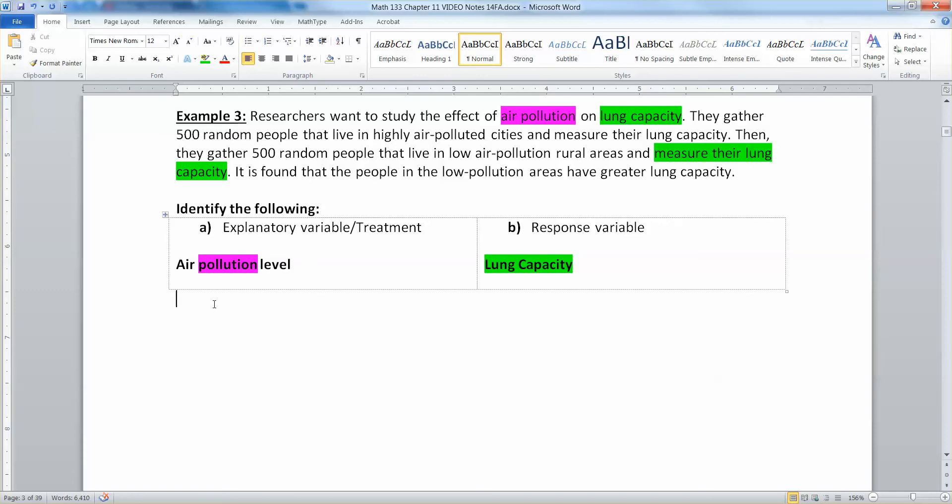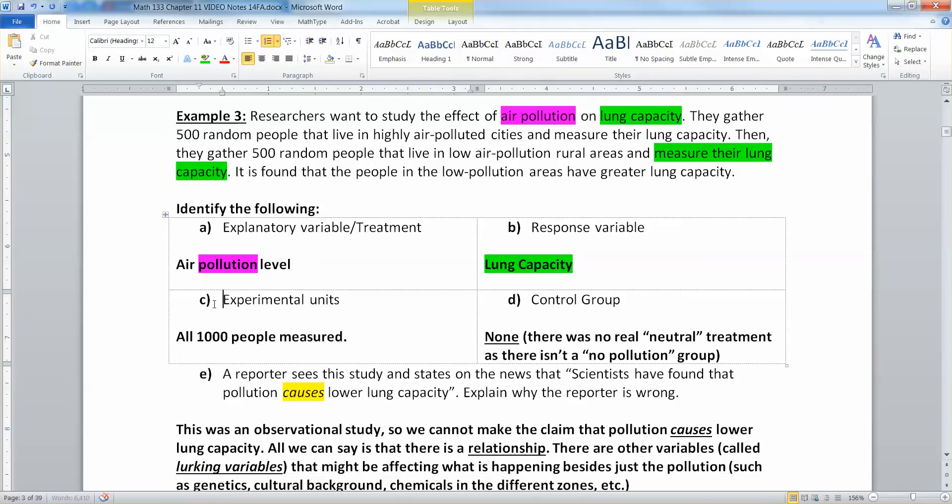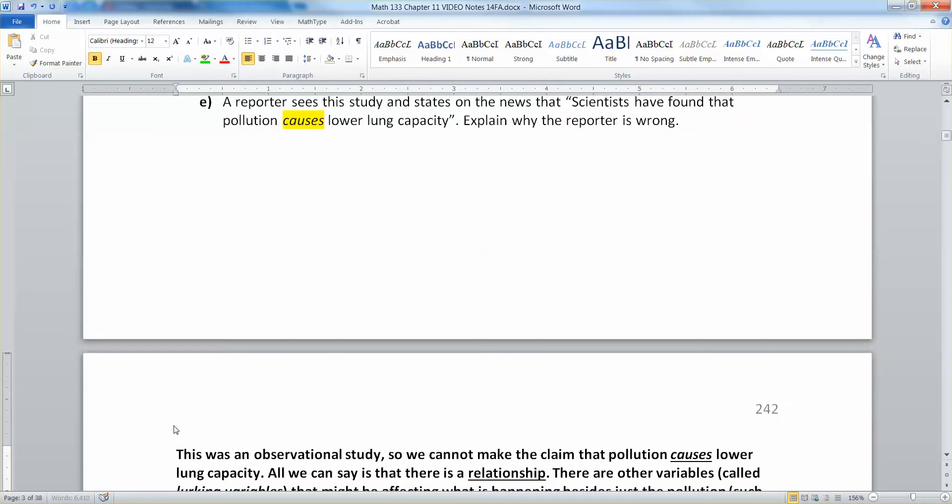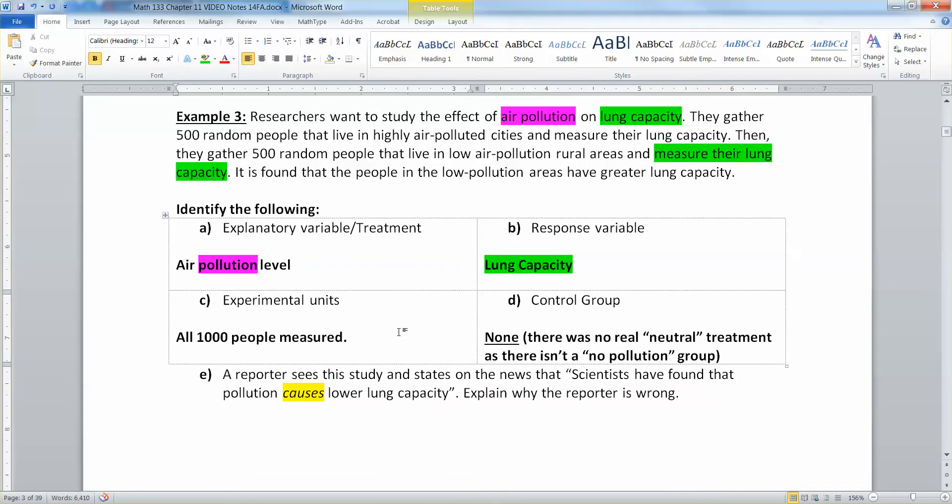So then we want to know what's our experimental units and control group. Well, the experimental units will be all 1,000 people that you're gathering information on. So you have 500 that live in the high pollution cities and 500 that live in the low pollution rural areas. Together, that makes 1,000.